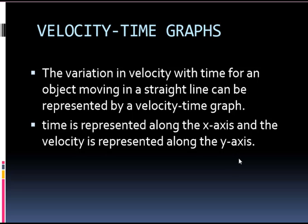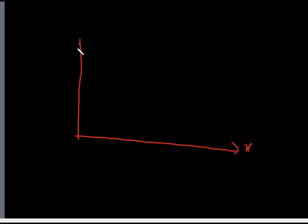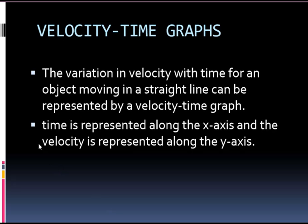If I draw a graph here, this is the x-axis and this is the y-axis. The x-axis is always taken as time and the y-axis changes. In previous classes, we took y-axis as distance or displacement. Here, we will take y-axis as velocity. As time increases, velocity also may increase. Time is represented along x-axis and velocity is along y-axis.